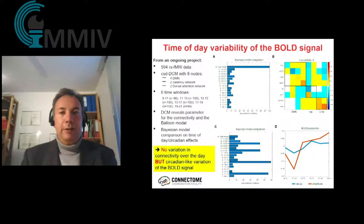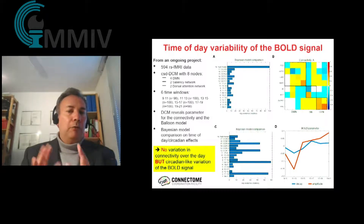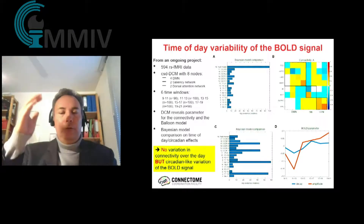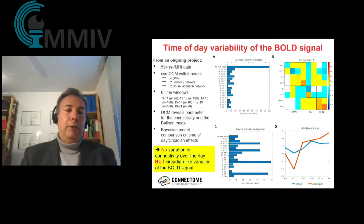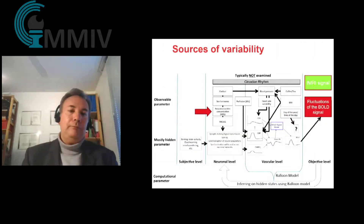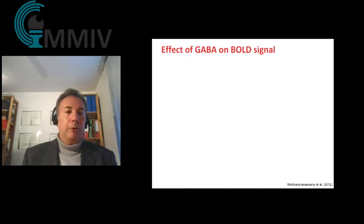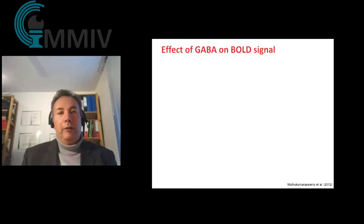We are now working on replicating that with different databases and trying to find methods to compensate for this time-of-day effect. The stiffness of the vessel system seems to affect how long and how large the BOLD signal amplitude is, and many analysis methods rely on that amplitude — but it does not appear to be a very stable signal. We also looked at the influence of neurotransmitter concentrations by using MR spectroscopy, which has come up at this conference already a couple of times. The individual concentration of neurotransmitters also has an effect on how the BOLD signal looks.